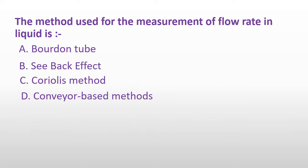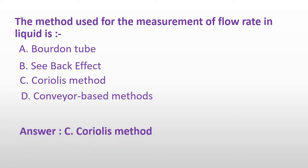The method used for the measurement of flow rate in liquid is: Option A: Burden tubes. Option B: Seabank effect. Option C: Coriolis method. Or Option D: Conveyor based method. And the answer is Option C: Coriolis method.